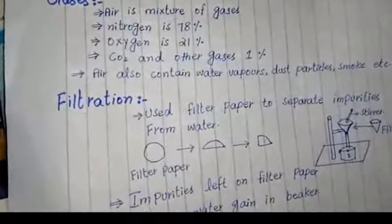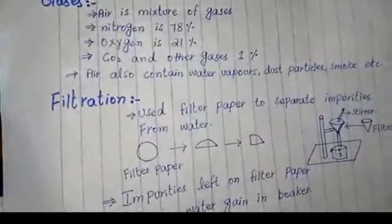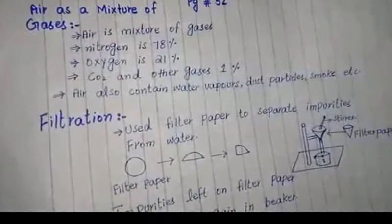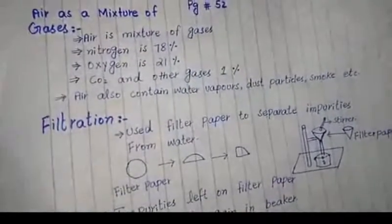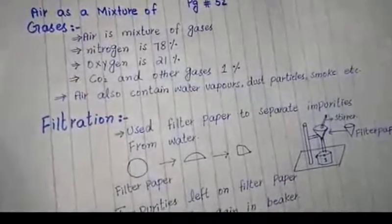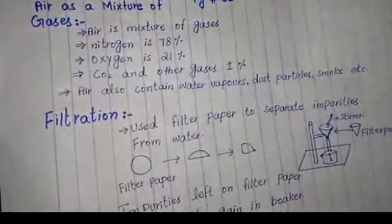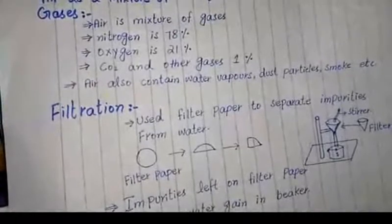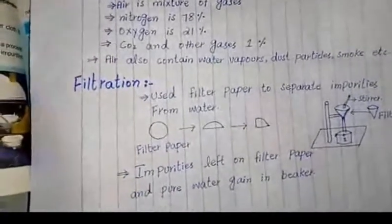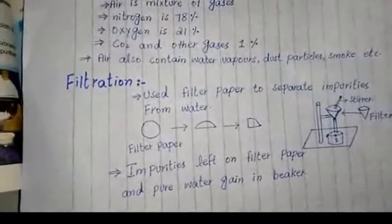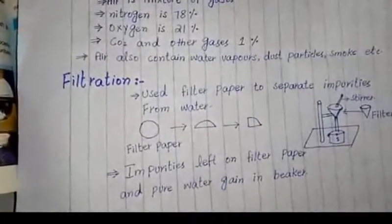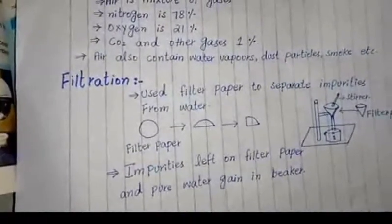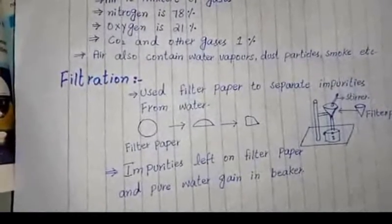First of all we discuss the method of filtration. In the method of filtration, filter paper is used to separate the impurities from the water. Filter paper is not a common paper — it is used to separate impurities from water. It is used in laboratories to purify water. For example, take a beaker, take a stand and attach a funnel on the stand, and place filter paper into the funnel.